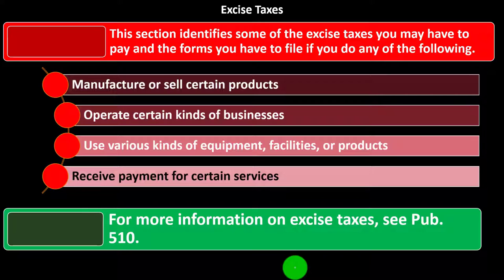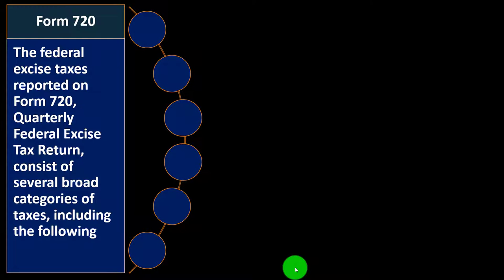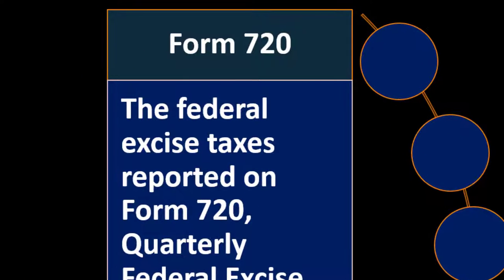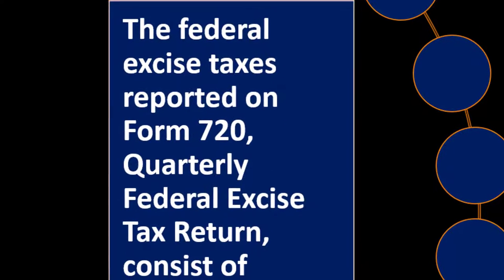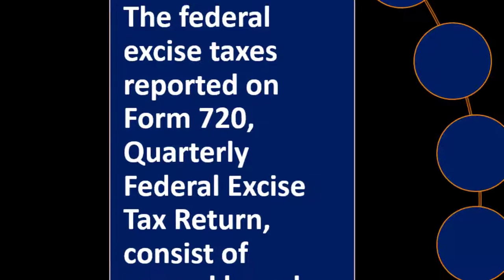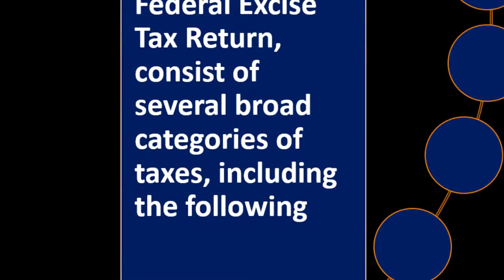You can find that on the IRS website, irs.gov. Form 720 — the federal excise taxes reported on Form 720, the quarterly federal excise tax return, consist of several broad categories of taxes.